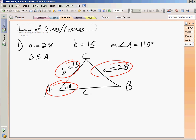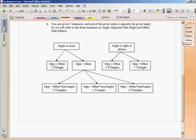So our angle is obtuse, 110 degrees. So I go to this side of the flowchart. Now the terminology, opposite and other. You're given two sides. You're given one side that's opposite the angle you're given, and then you're just given another side.